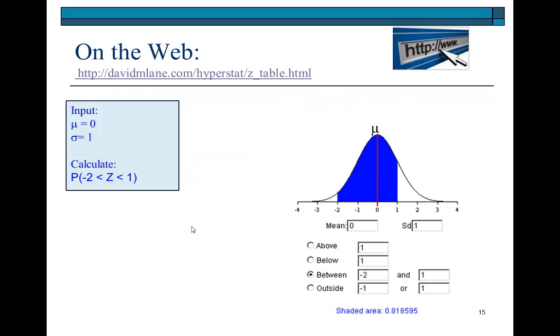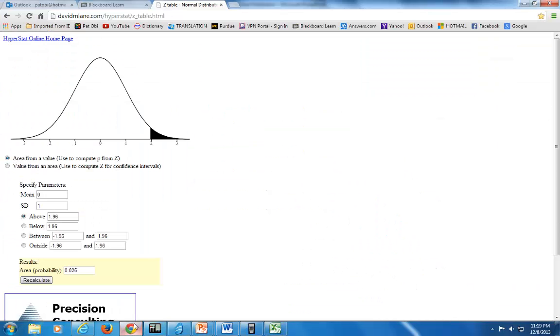Now though, there is an even easier way of finding probabilities corresponding to Z values on the web. One of my preferred websites is this one that you see here, which is HyperStat. So, if we go there, we'll see a dialog box that looks like this. And we'll simply enter in the values, and it'll automatically calculate the result for us. So, let's go there. I break it up. That's it right here.